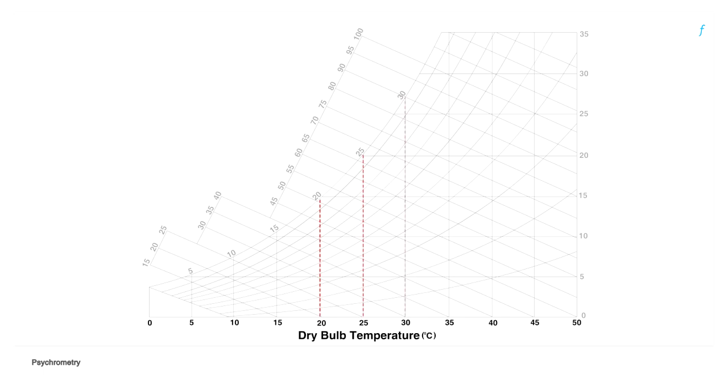Dry bulb temperature is represented on the x-axis and increases as we move from left to right. Wet bulb temperature lines are inclined and straight. They increase from left to right along the highlighted curve. Enthalpy lines are also inclined and straight and increase in the direction of the highlighted curve.